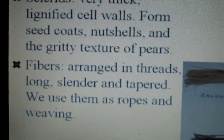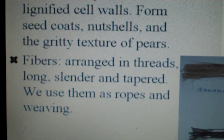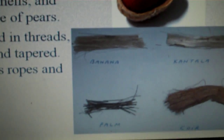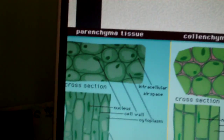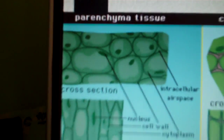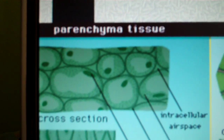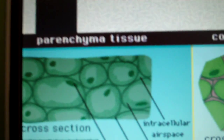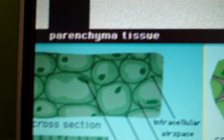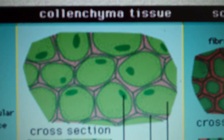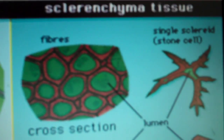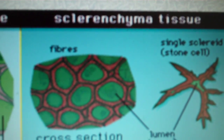Then we have the fibers. They're arranged in threads — long, slender, and tapered. We use those for ropes, linen, weaving, and that sort of thing. Here's a look at the three types of cells: we have the parenchyma cell tissue — the typical plant cell — then we have the colenchyma tissue and the sclerenchyma tissue.